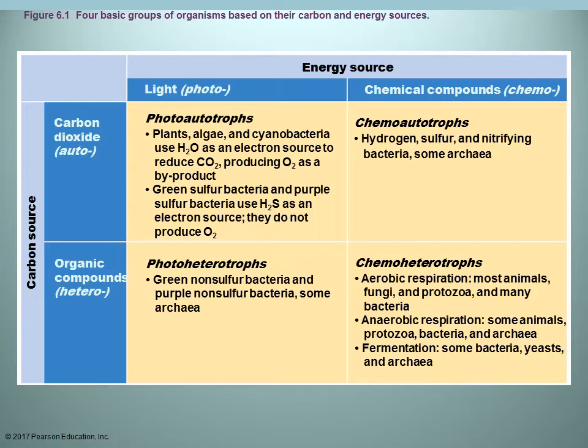Chemoautotrophs get their energy from chemicals but are able to use carbon dioxide as their carbon source. Chemoheterotrophs — perhaps the most familiar category — must use chemicals for their energy source and organic chemicals for their carbon source.